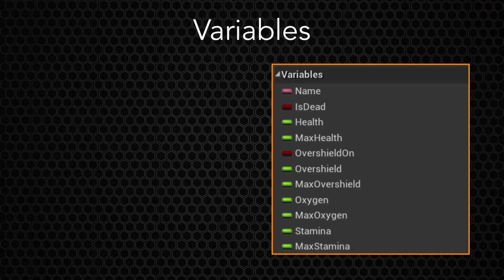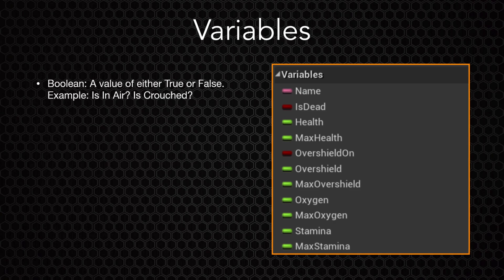Lastly, we'll introduce variables into the mix. Variables contain different types of values that can be changed while in-game, and the type of value depends on the type of variable. For instance, a Boolean variable can be a value of either true or false. Inside Unreal Engine 4, they are represented by a dark red. There are two Boolean values in this character: 'is dead,' asking if the player is dead, and 'overshield on,' asking if the overshield is active. Both questions would only have a yes or no answer, thus true or false.